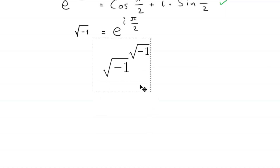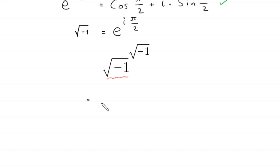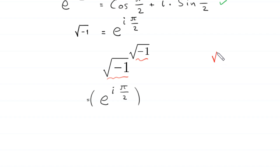We have to evaluate the expression root negative 1 to the power root negative 1. So we write this base, root negative 1, as e to the power i times pi over 2, to the power — and since root negative 1 is equal to i — we write the power i.